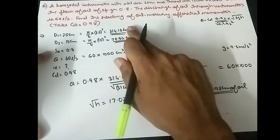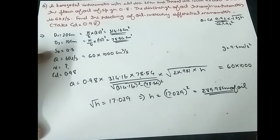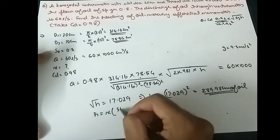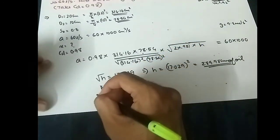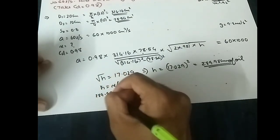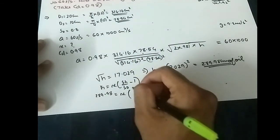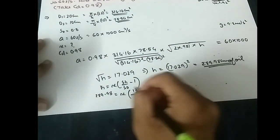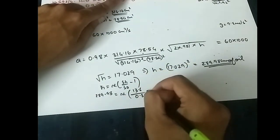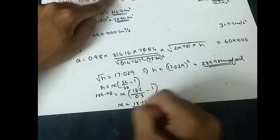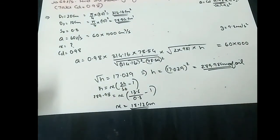Now we find X. Since the specific gravity of the fluid in the differential manometer is higher than the fluid flowing through the pipe, the formula is: h = X into (Sh/So − 1). So 289.98 = X into (13.6 / 0.8 − 1). Solving, X equals 18.12 centimeter.